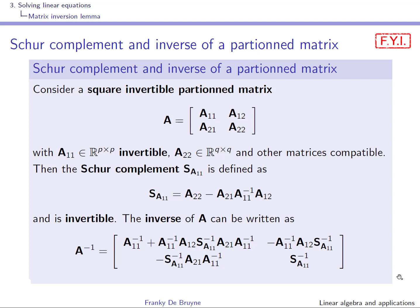We assume here that we have a partitioned matrix A, and this matrix is square. Very importantly, we assume it has an inverse, so the matrix A is invertible. In this slide, we will assume that A11 is invertible. A11 is a square matrix of dimension P times P, and A22 will also be a square matrix, and the other matrices are compatible.